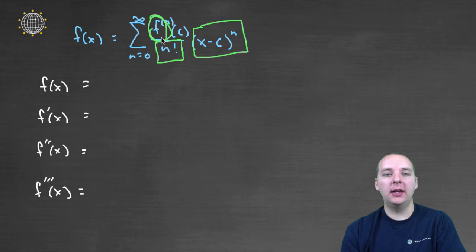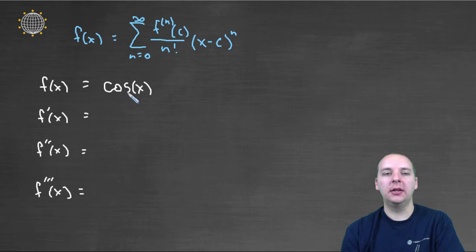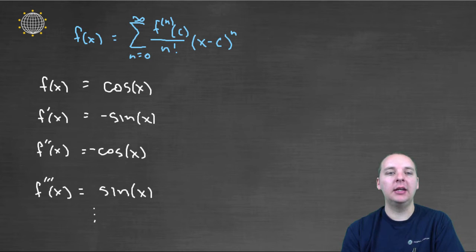So we will actually go ahead and find the first few derivatives of cosine. And so f of x is cosine. The derivative of cosine is negative sine. Second derivative is negative cosine. Third derivative is positive sine. And we could keep going if we needed to. You can do as many of these as you want to until you feel comfortable with the pattern.